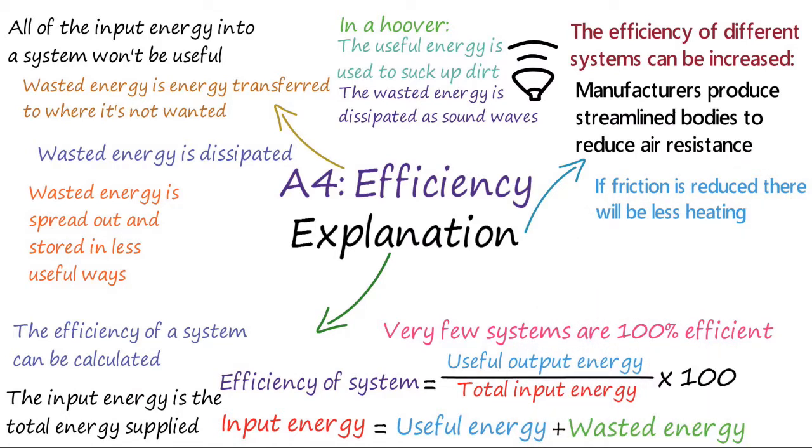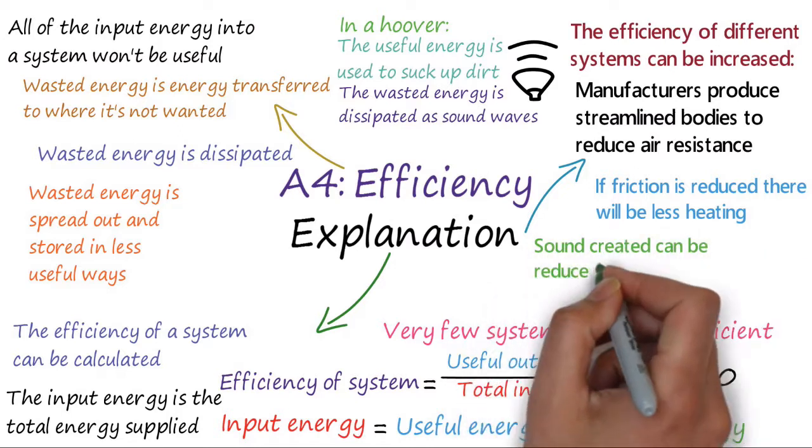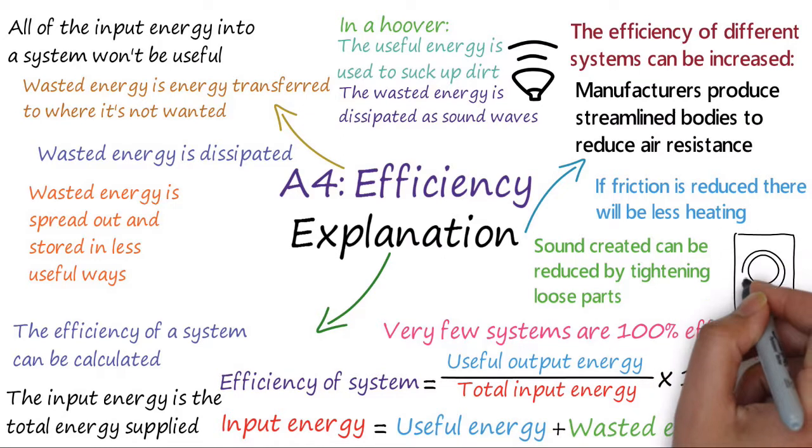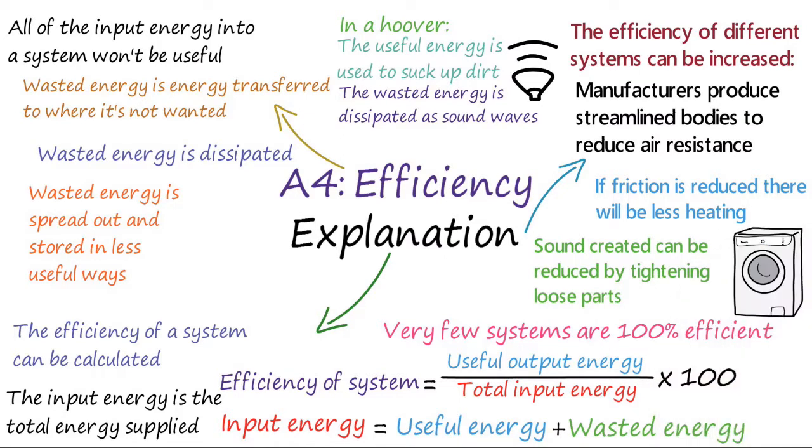We can actually increase the efficiency of different systems in a number of ways. In machines, friction between moving parts is an issue as it causes energy to become wasted as heat. If the friction is reduced, there will be less heating, so more of the energy input is used as useful energy. In large machinery, the amount of sound created can be reduced by tightening loose parts.